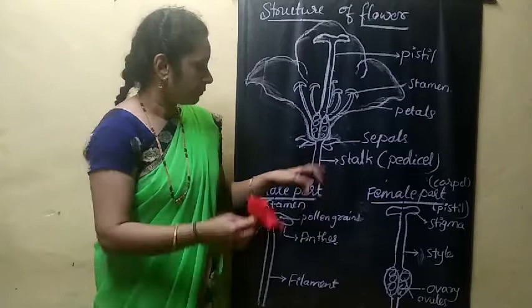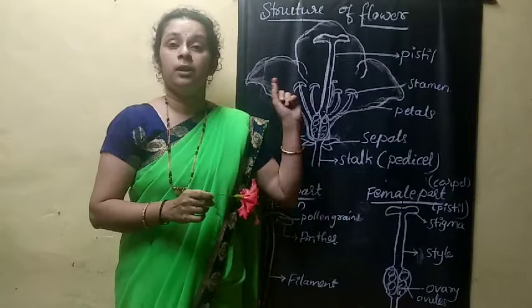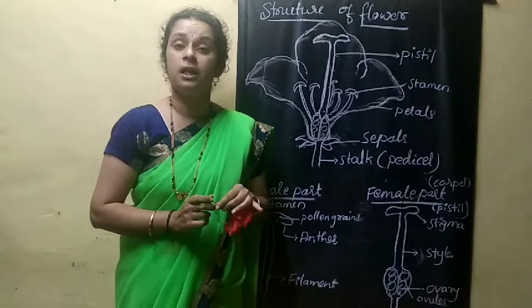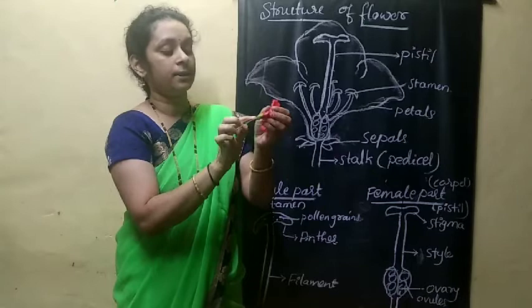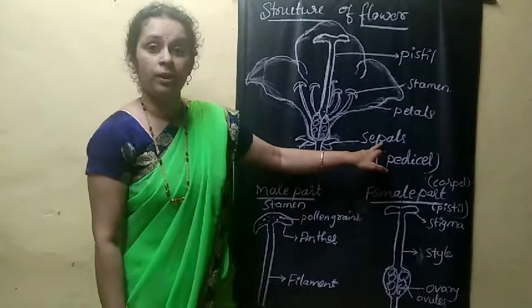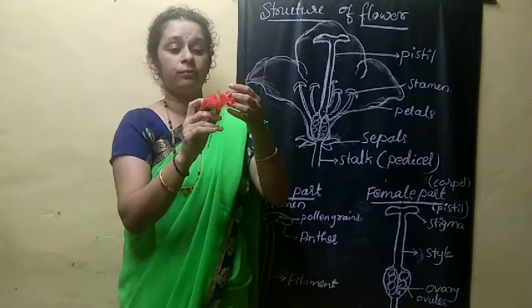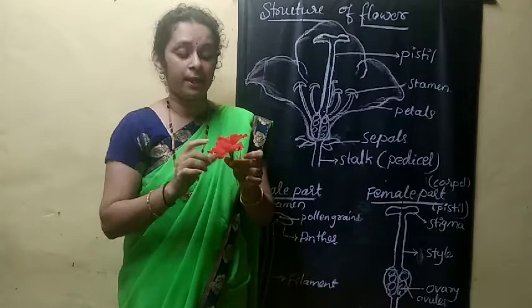First of all, this flower has a stalk — that is called a pedicel. Above that you will come across a green leaf-like structure — that is called a sepal. And above that you will come across a very attractive part of the flower — that is called petals. These petals are the very attractive part of the flower.